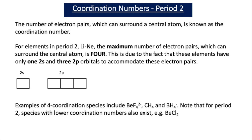For elements in period 2 — lithium to neon — the maximum number of electron pairs which can surround a central atom is 4. This is due to the fact that these elements have only 1 2s and 3 2p orbitals to accommodate these electron pairs. Examples of these four-coordinate species include BeF4 2-, CH4, and BF4 1-. Note that for period 2, species with lower coordination numbers can also exist — for example, beryllium chloride, BeCl2, which has a coordination number of 2.